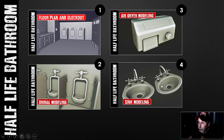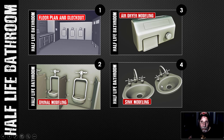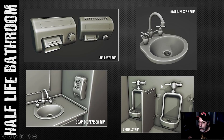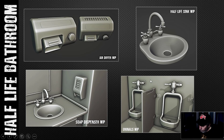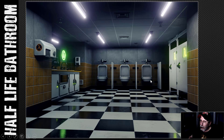I didn't end up showing the texturing or modeling of some of the other pieces — there's just so much to show sometimes. So here is a little collection of the resources. You can also see there's a soap dispenser and a slight change to the air dryer. Most of the stuff is in there, and I'm going to show you the renders now. This is done in EEVEE.